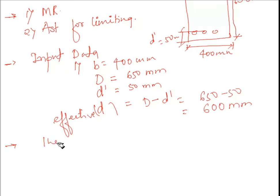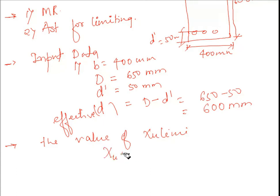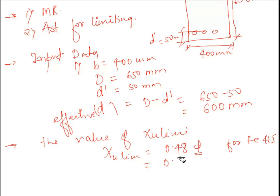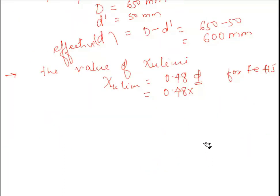Next step is to calculate Xu limiting. As per IS 456, the formula for Xu limiting for Fe415 steel is: Xu,lim = 0.48 × d. So Xu,lim = 0.48 × 600 = 288 mm.